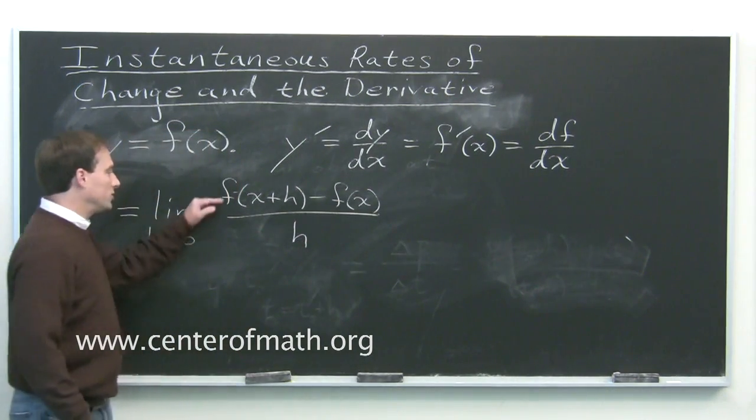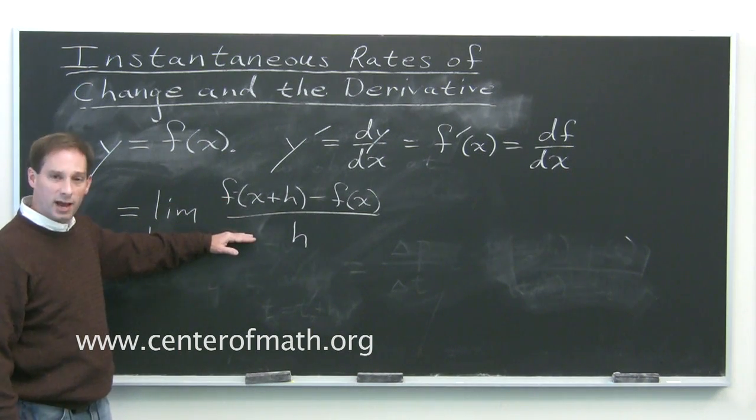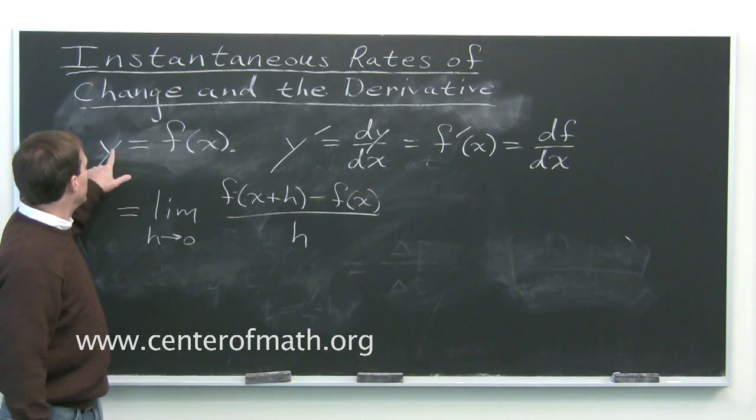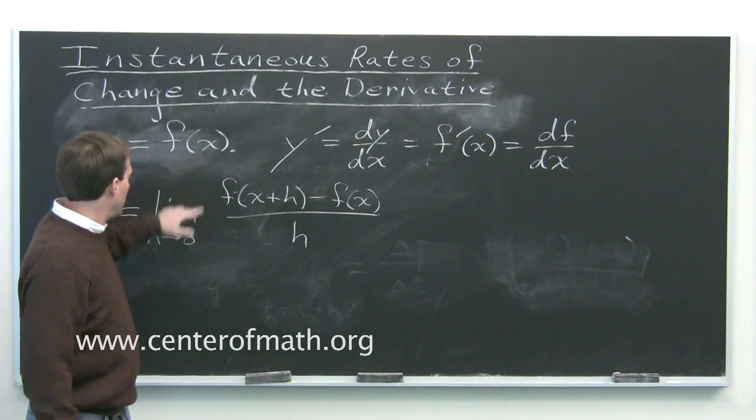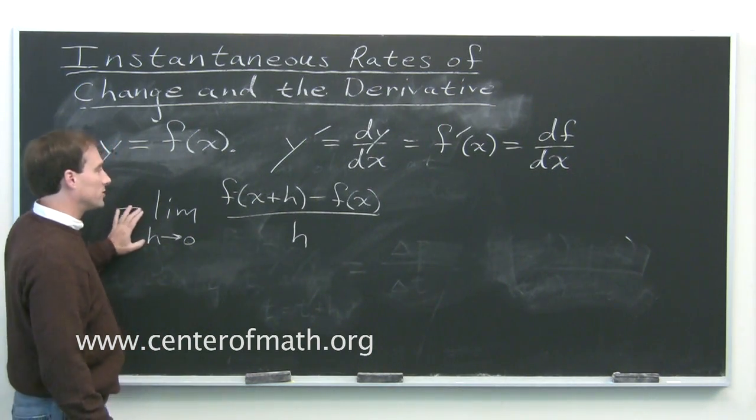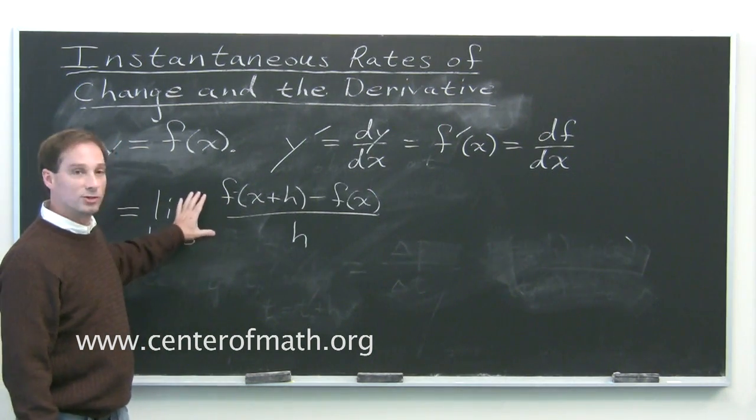It's the change in f over the change in x. So the change in the dependent variable divided by the change in the independent variable, and as you take the limit as the change in the independent variable approaches zero.